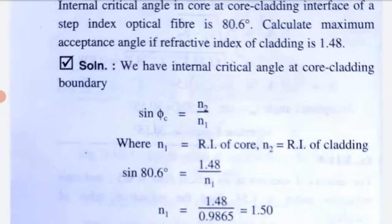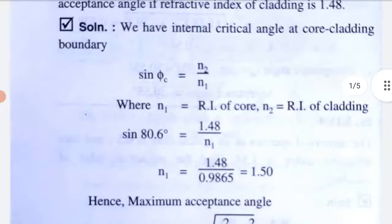To solve: the internal critical angle at the core-cladding boundary gives sin(critical angle) = N2/N1, where N1 is the refractive index of core and N2 is the refractive index of cladding. With critical angle = 80.6°, sin(80.6°) = 1.48/N1, so N1 = 1.48/0.9865 = 1.50. Next we find the acceptance angle.